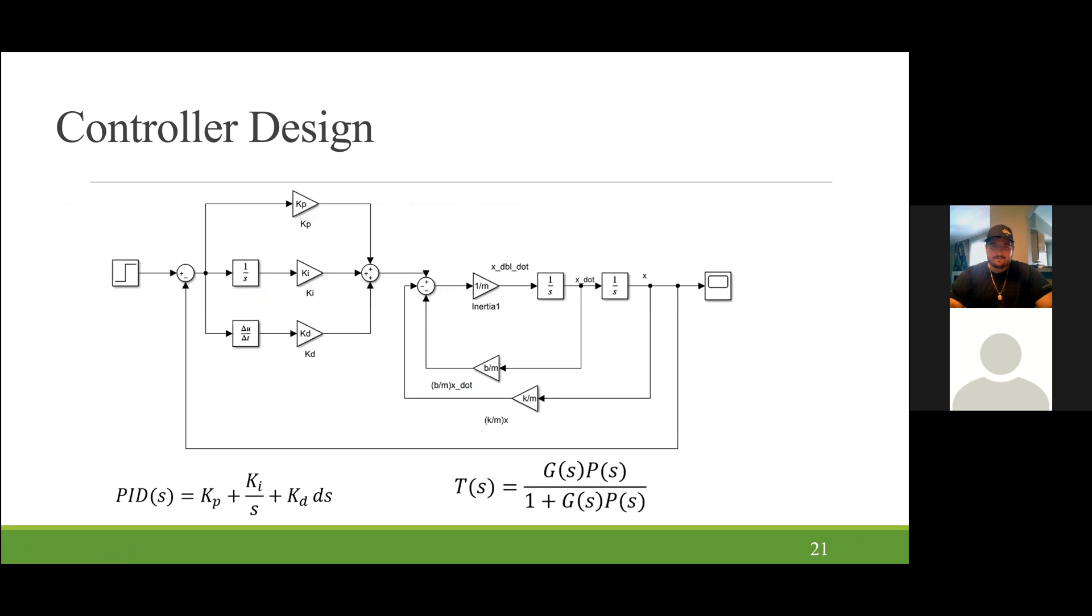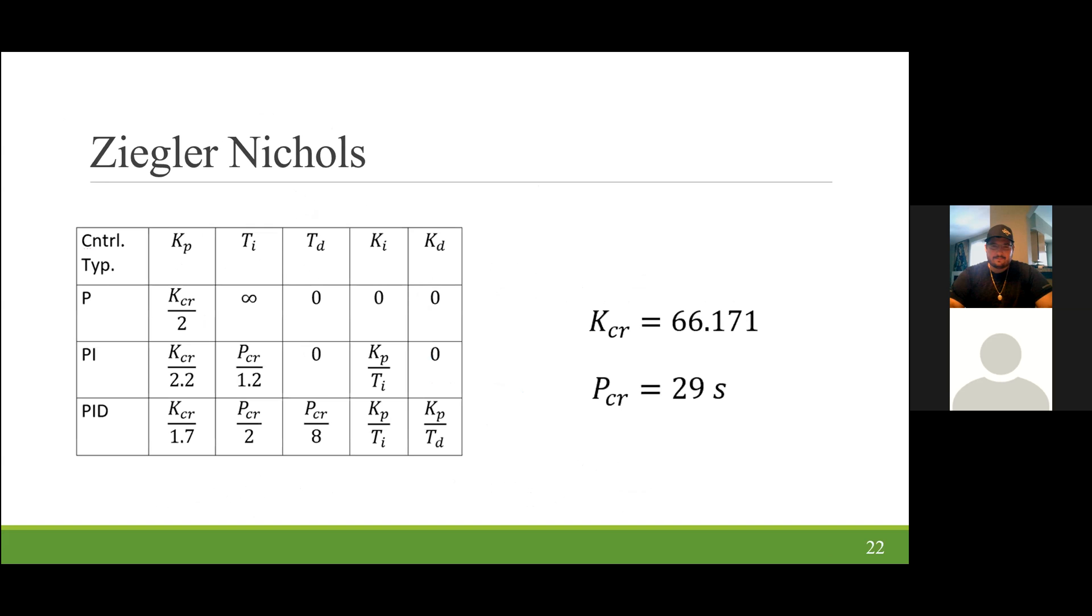Now that we know our critical gain and critical period, we can begin our controller design. Here we have a general layout of a PID controller. Basically you have your controller on the left and it feeds into your transfer function on the right and it has a negative feedback loop that goes around. So our critical gain and our critical period come into play when we start solving with Ziegler-Nichols. And the Ziegler-Nichols equations help us determine the proportional gain, the integral time, the derivative time, the integral gain, and the derivative gain. The P controllers only use a proportional gain. A PI controller uses both proportional and integral gain, and a PID uses all three: proportional, integral, and derivative gain. All these can be solved using the critical gain and the critical period.